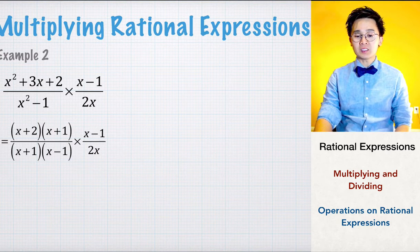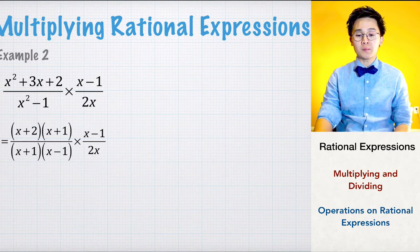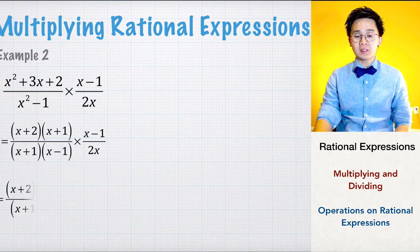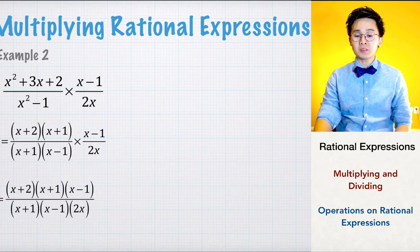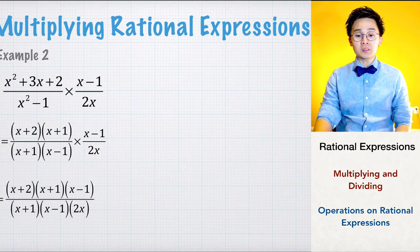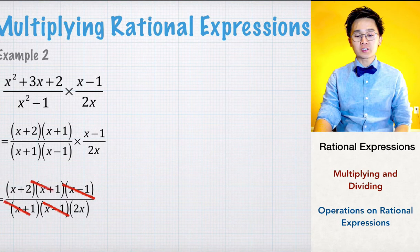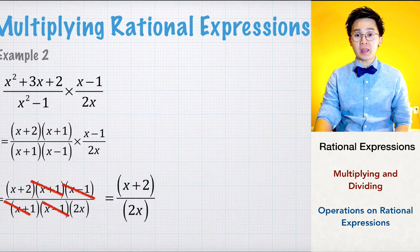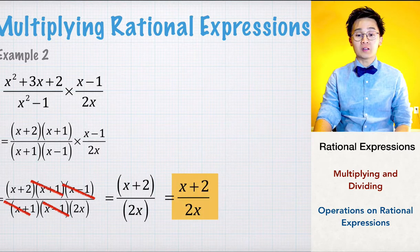The second fraction is already in simplest form, so we put all the factors together and see which terms we can cancel. We can cancel out x minus 1 and x plus 1 as common terms, leaving us with x plus 2 all over 2x. This is the product of our rational expressions using the factoring and cancellation technique.